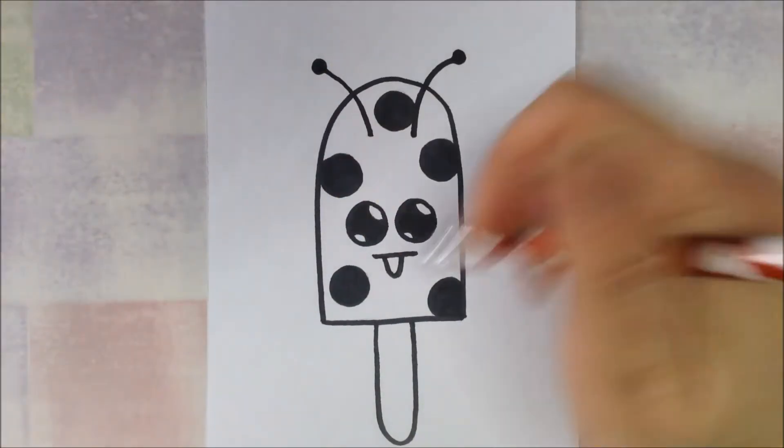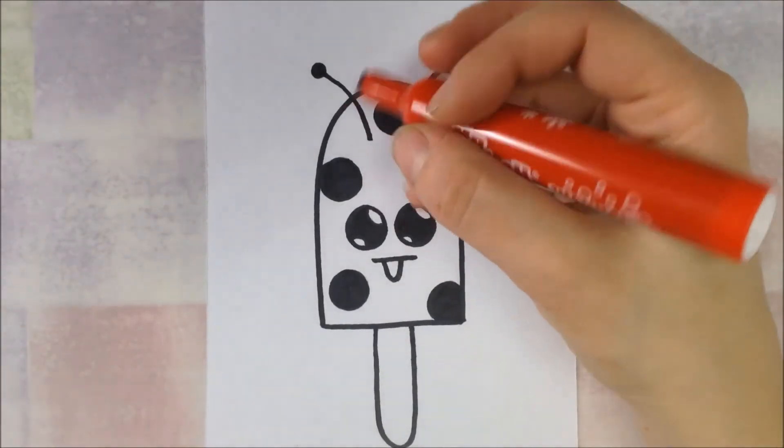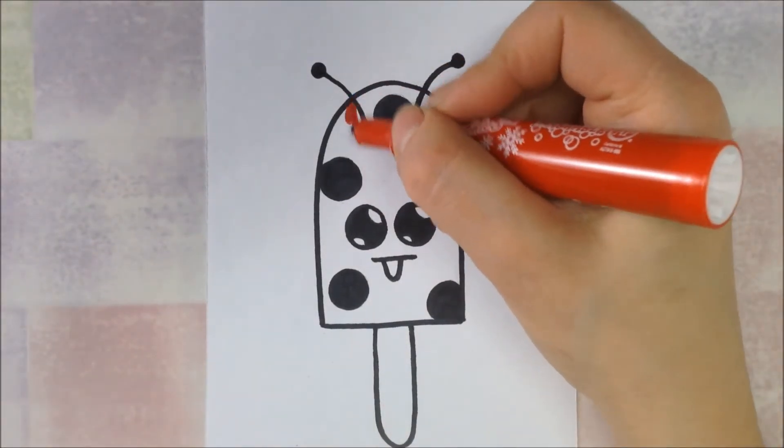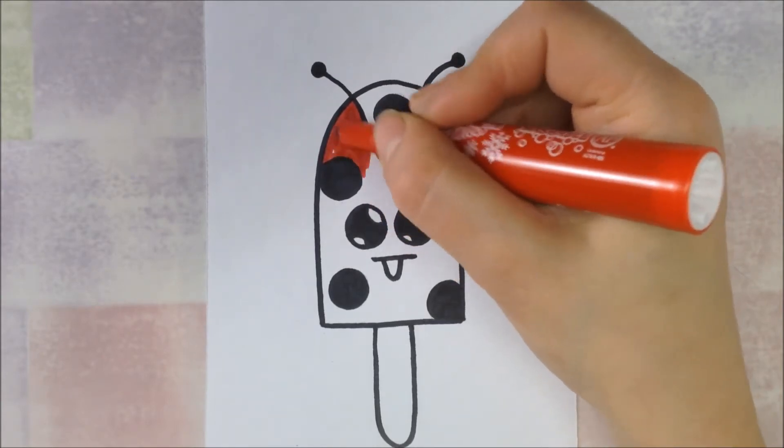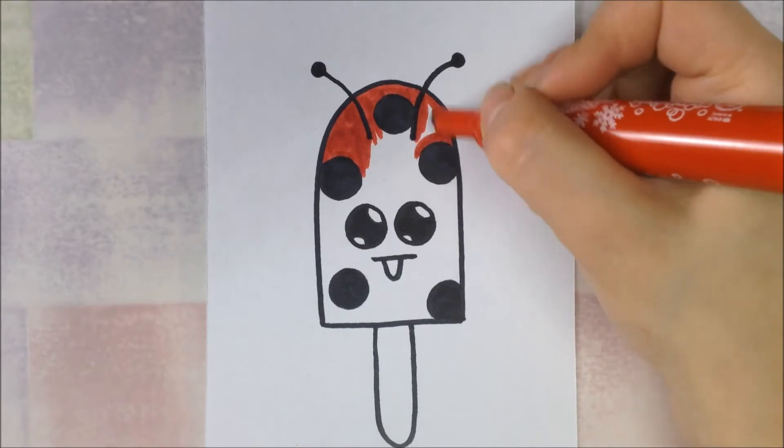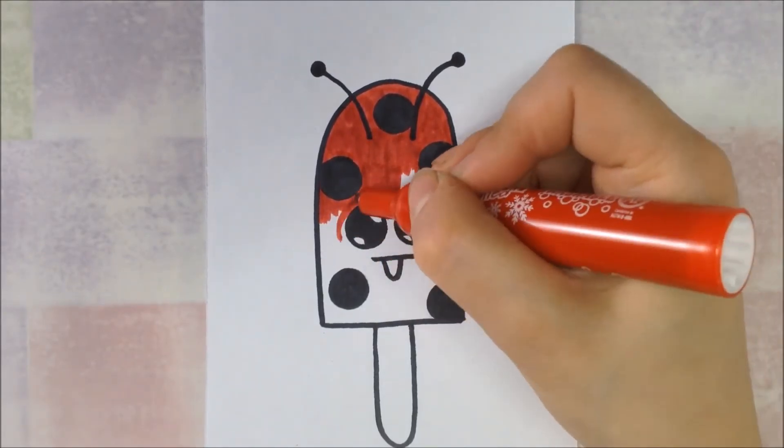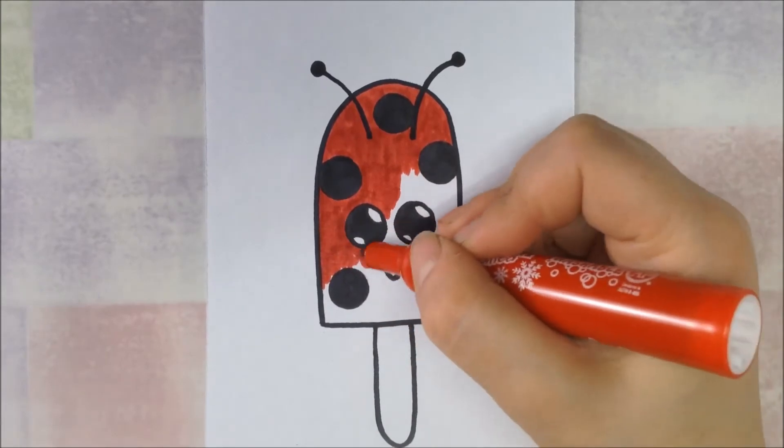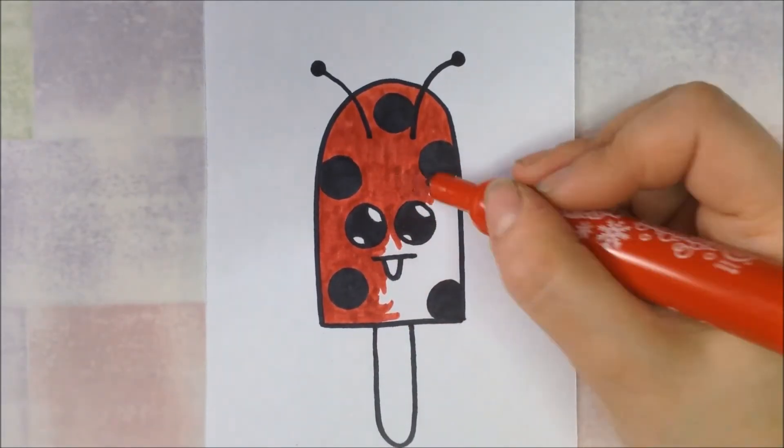I'm just going to take an eraser and erase a few spots that I missed with the permanent marker, and then you can start coloring. I'll speed this part up so you don't have to watch me color all the time. The only color we need for our ladybug is red. We'll need a different color for the stick, but just for the ladybug part all we need is a red marker. If you go on top of the spots a little bit, it's okay, it's not going to show.